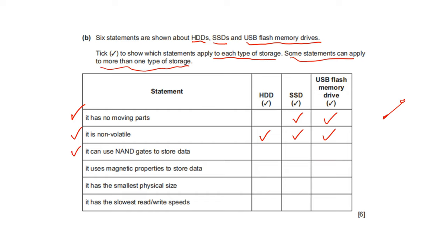It can use a NAND gate to store data — that is SSD and USB flash drive; both use NAND gates. It uses magnetic properties to store data — that is HDD. It has the smallest physical size — that is USB flash drive. It has the slowest read/write speed — that is HDD.